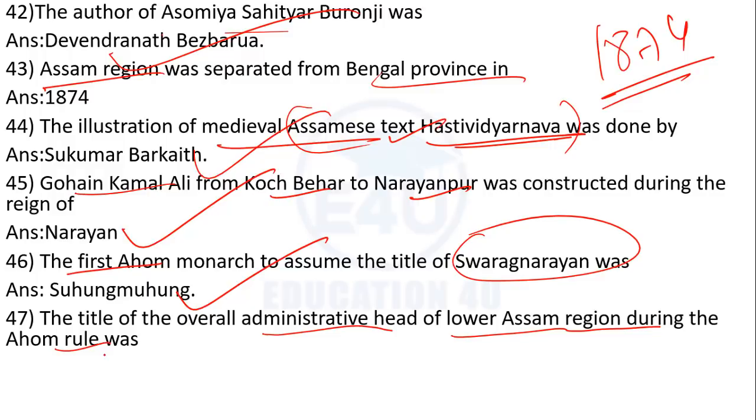The title of overall administrative head of Lower Assam region during Ahom rule — who held this? The answer is Barphukon, who was given responsibility for all of Lower Assam.